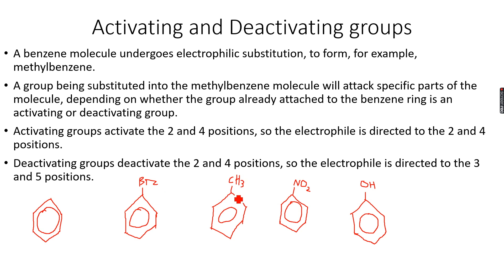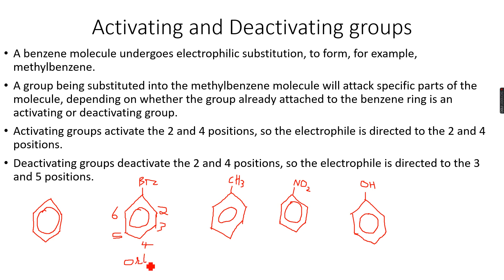The type of group already on the ring determines where the new group will attach. Before that, let's assign numbers to these positions: position 2, 3, 4, 5, and 6. Positions 2, 4, and 6 are known as the ortho positions. Position 4 is known as the para position. And positions 3 and 5 are known as the meta positions. So we have ortho and para, and then we have meta.